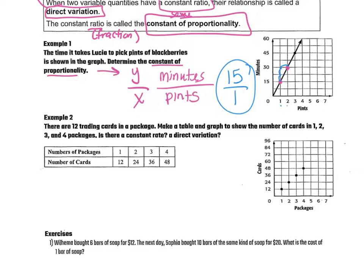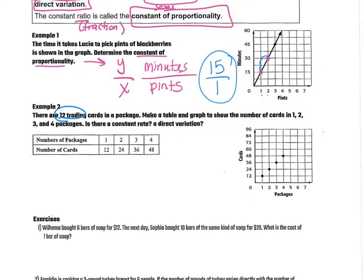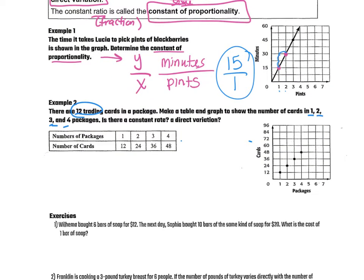Now example two, there are 12 trading cards in a package, make a table and a graph, which they've already done for us, to show the number of cards in one, two, three, and four packages. Is there a constant rate? So does it change by the same amount each time? And is there a direct variation?